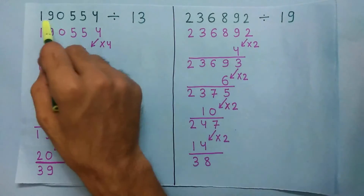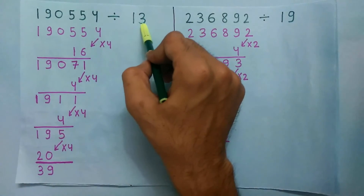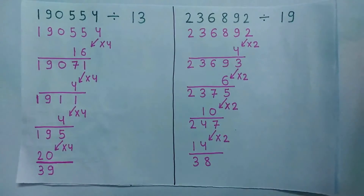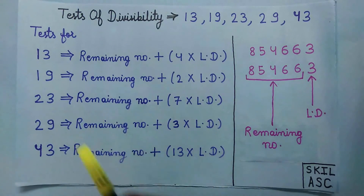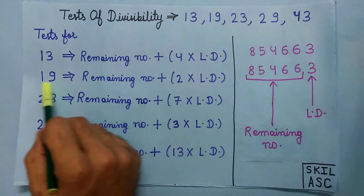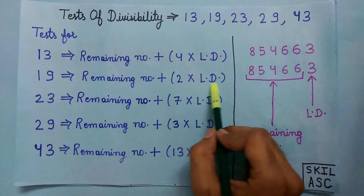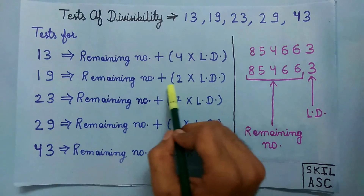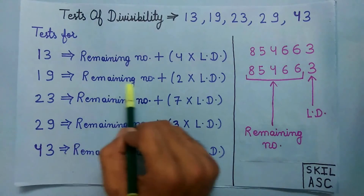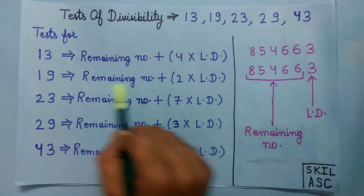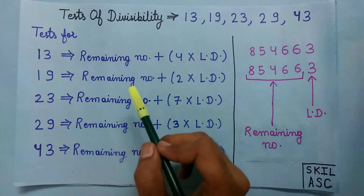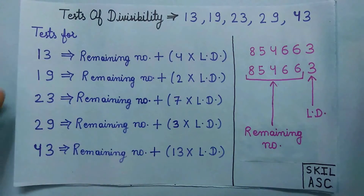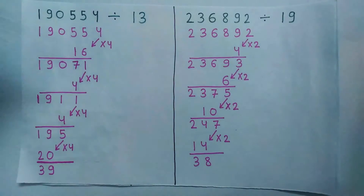Now 39 is divisible by 13, so this number is also divisible by 13. Now to check if a number is divisible by 19 or not, multiply the last digit by 2 and then add this to the remaining number. If this value is divisible by 19, then the number is also divisible by 19.